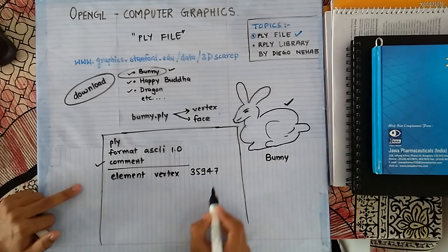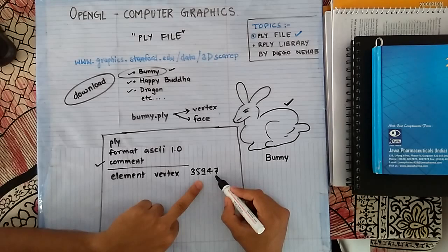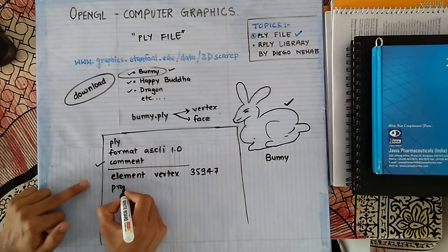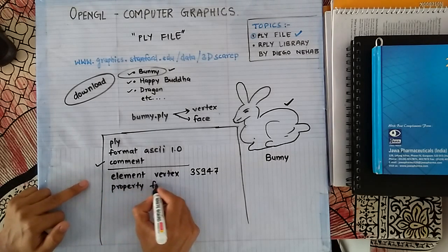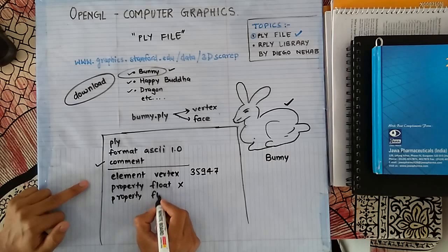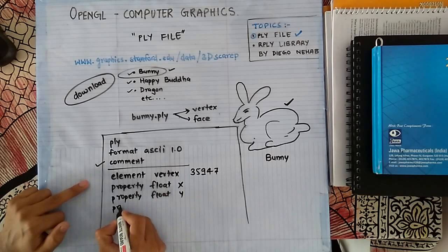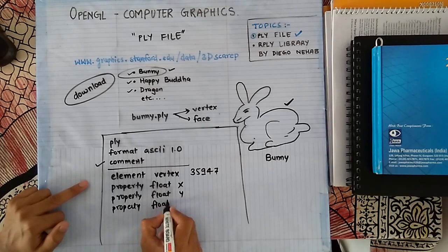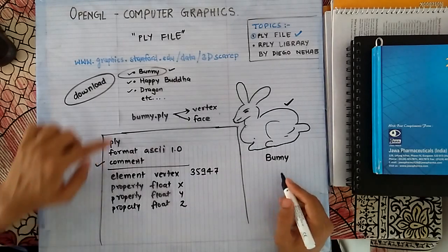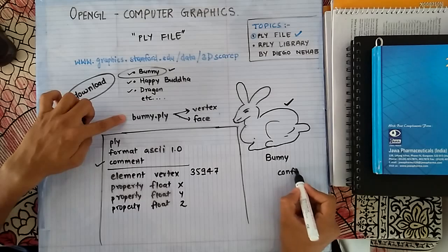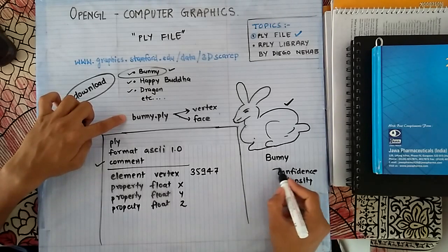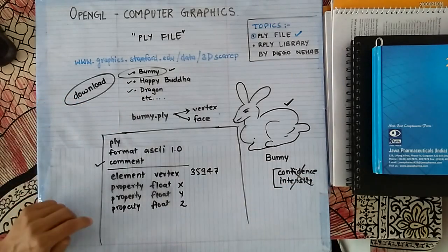The vertex count is 35,947 — that means so many vertices are used to make this bunny. Its properties are defined as in the previous example: property float x, property float y, and property float z. There are two more properties specified in bunny.ply — confidence and intensity — but we will not cover these two properties right now.